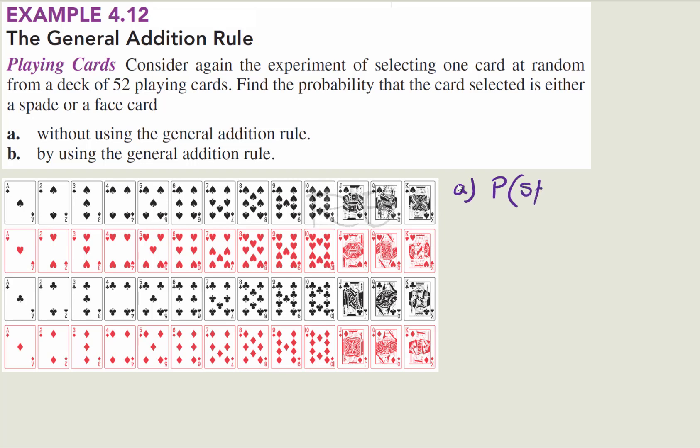So P of a spade or a face card will be found this way. We first select all the spades. Let's take all the spades. You have 13 of them and then we're going to select all the face cards. Now we're selecting all the face cards.